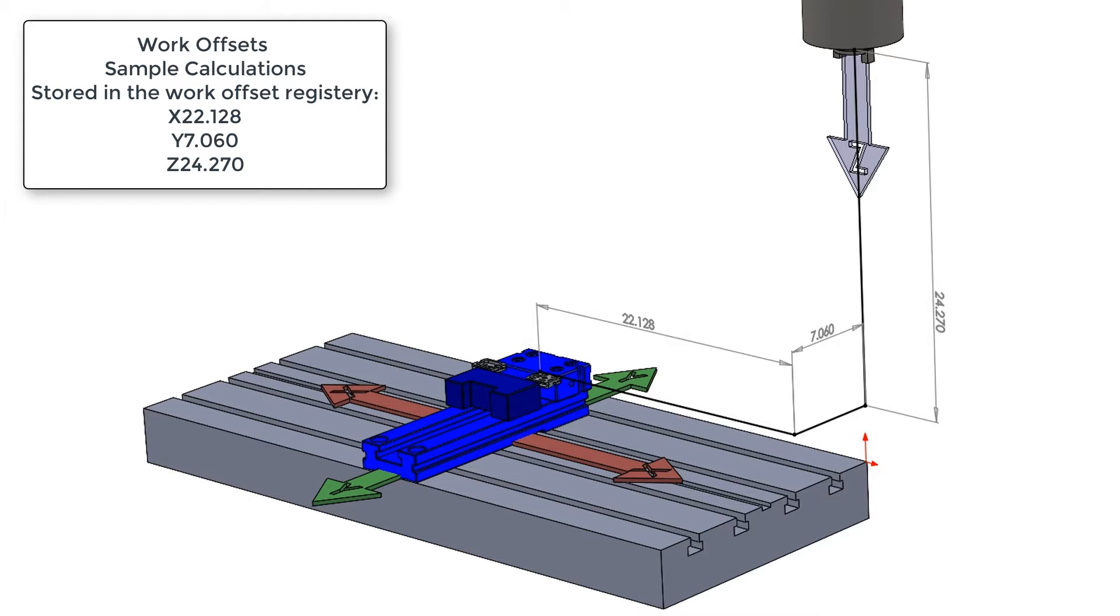This information will be stored in the machine's offset registry. When a G54 on a FANUC control machine is programmed, or a G15H01 on an Okuma, the machine will use these values to know where to move the tool relative to the workpiece.